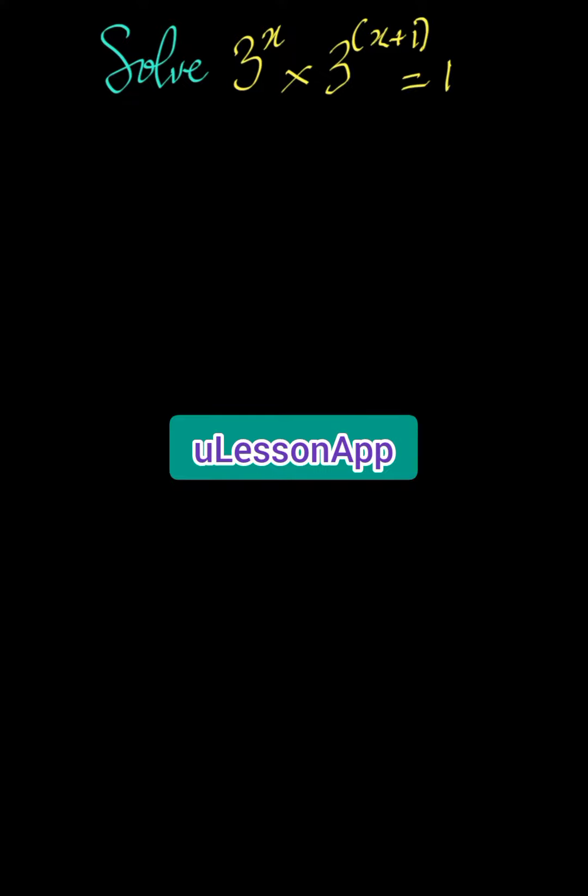So we have 3 to the power of x multiplied by 3 to the power of x plus 1, everything equal to 1.